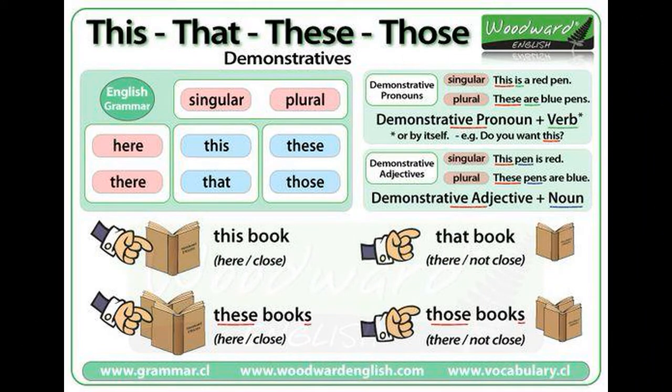Let's take a look at demonstrative pronouns. Check out the below chart for the full details. 'This' and 'these' are used for something that is nearby in distance or time. 'This' is used for singular nouns and 'these' for plural nouns. For example: 'This is my favorite book.' 'These over here are the best I've seen all day.'